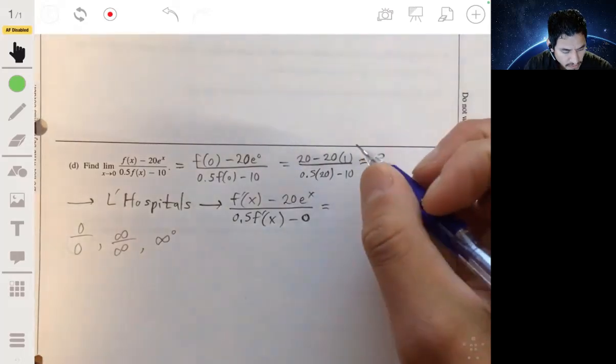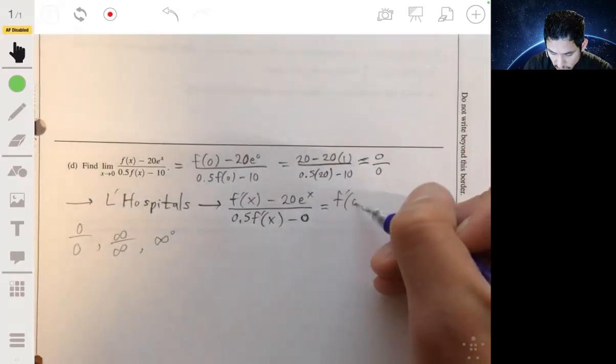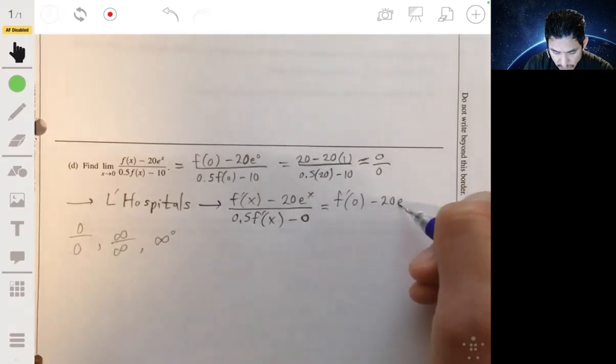So we're going to look at f prime of 0 minus 20 times e to the 0 over 0.5 times f prime of 0 minus 0.